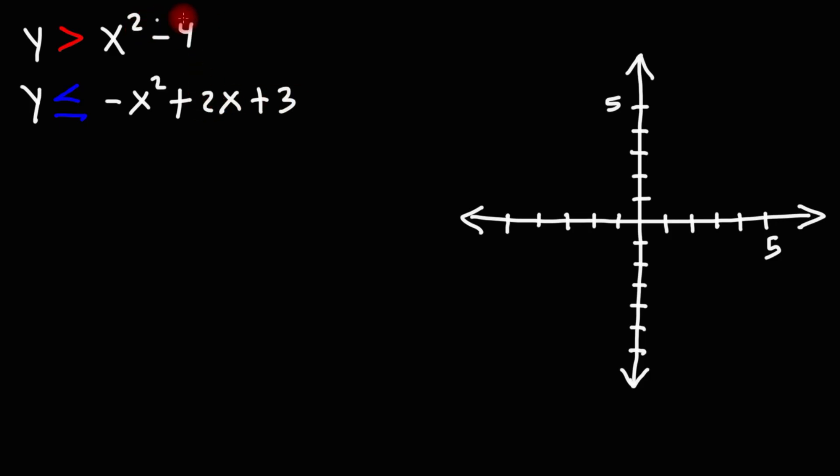We have y is greater than x squared minus 4. So let's graph that. The graph y equals x squared is basically a parabola that opens upward, like this.